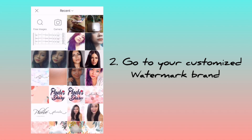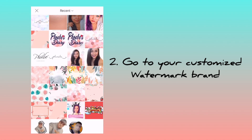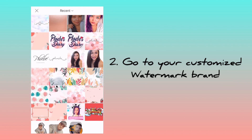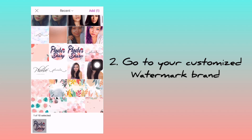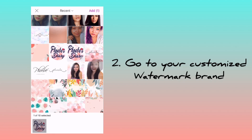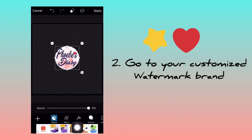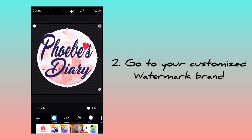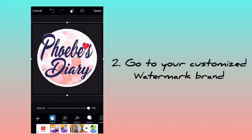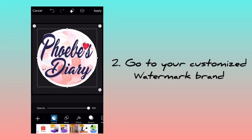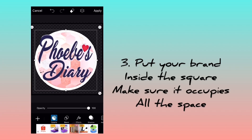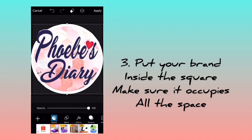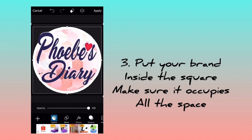And then go to your customized watermark brand, or your logo. I already made my logo earlier. I chose a circle shape, but any shape will do — stars, heart, or even your name. As long as you have a square background, put your logo inside the square and make sure it occupies all the space — it should be flush against the square background.